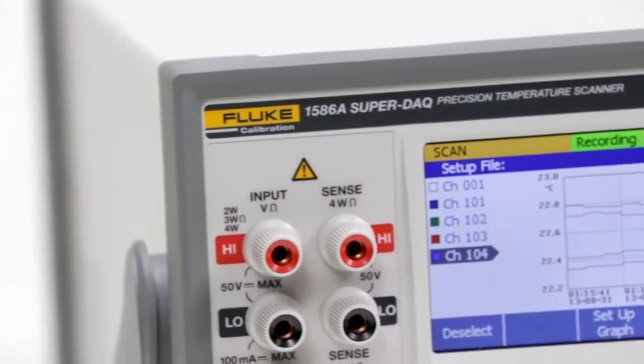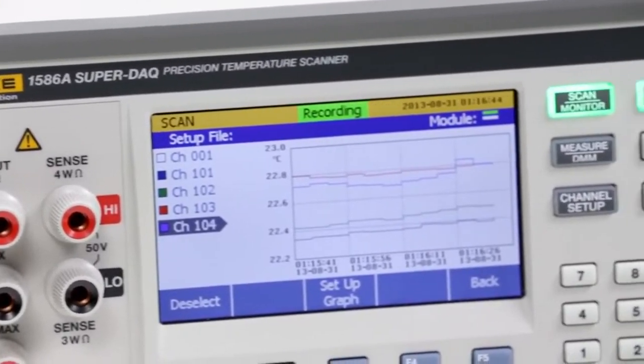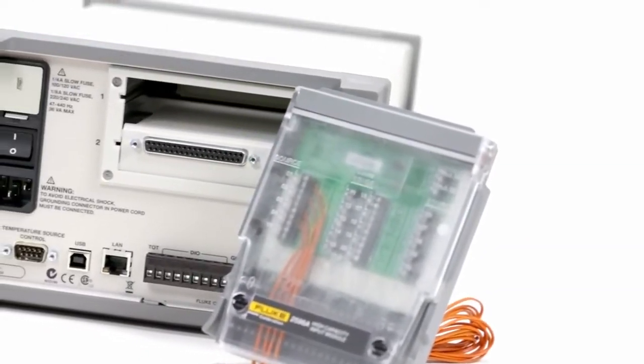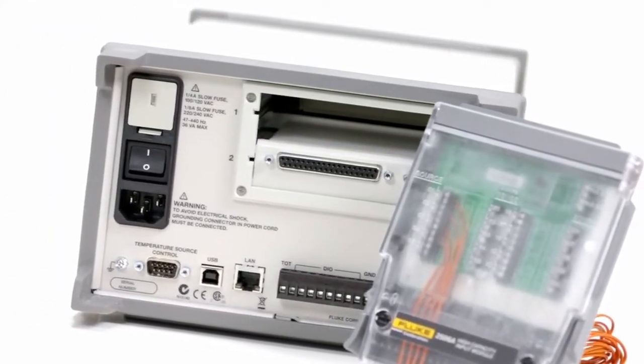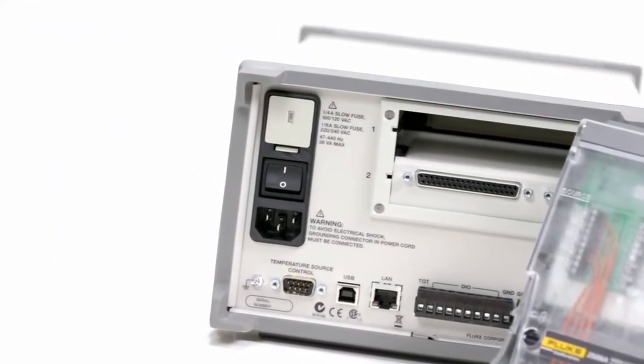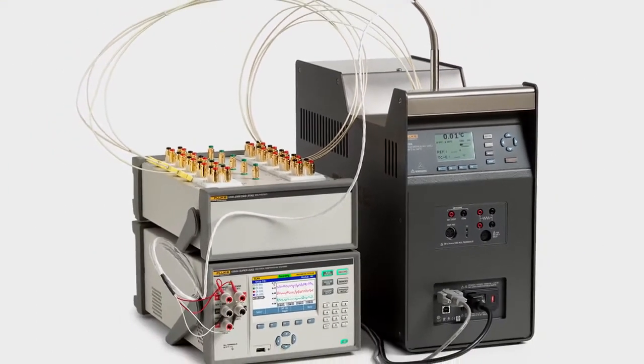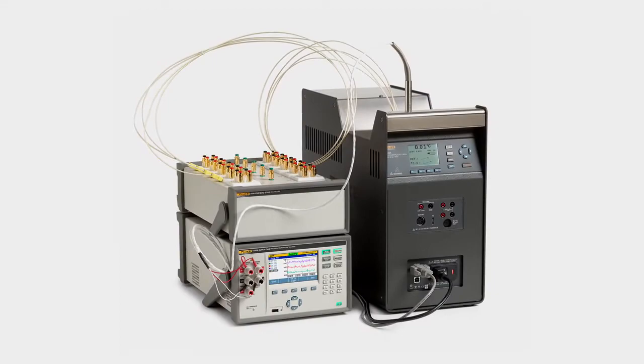The 1586 SuperDAC is the most accurate and flexible temperature data acquisition system on the market. It scans and records temperature, DC voltage, DC current, and resistance for up to 40 input channels and scan speeds as fast as 10 channels per second. The SuperDAC can be configured for use as a multi-channel data logger in the factory or as a precision reference thermometer for benchtop sensor calibration in the lab.